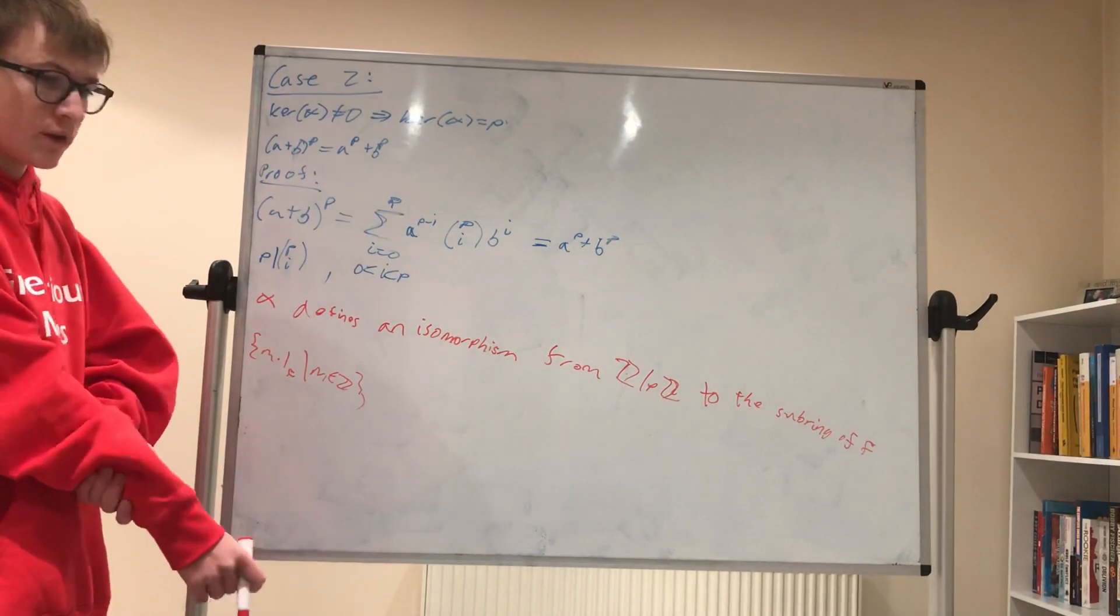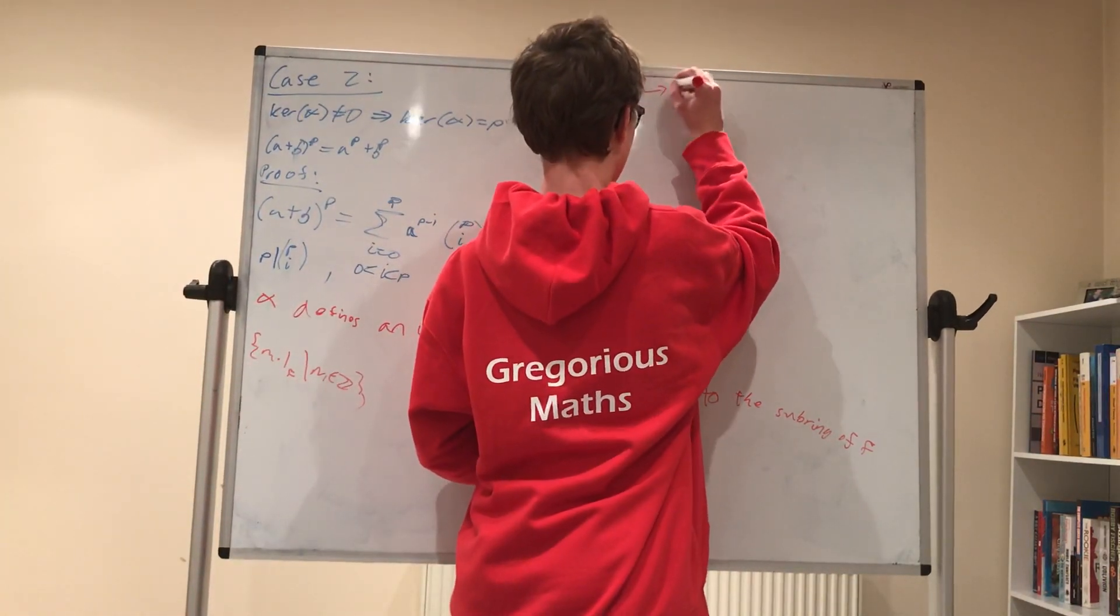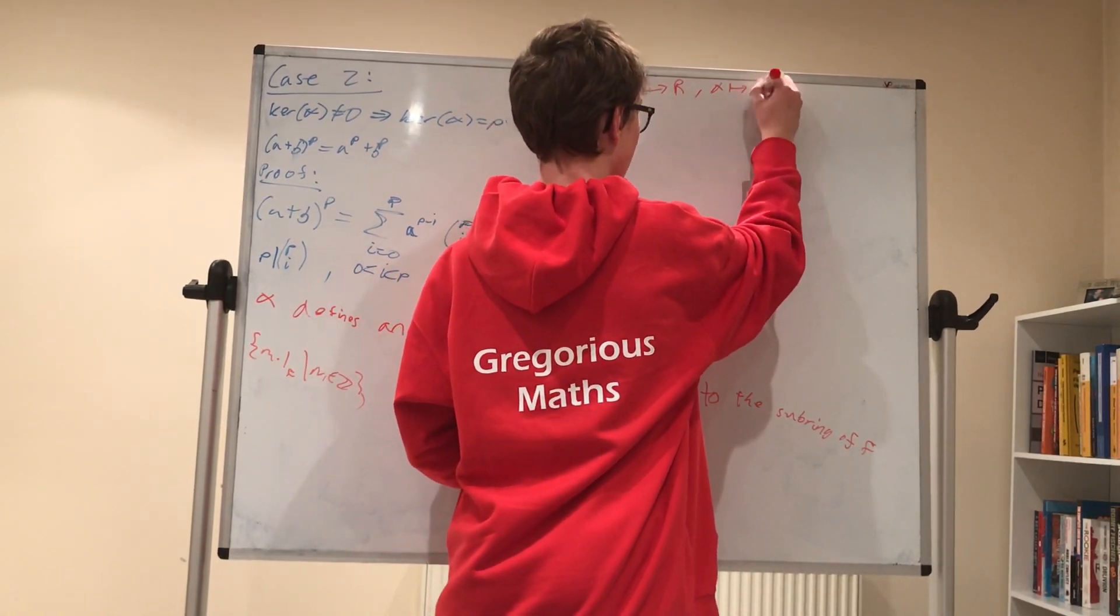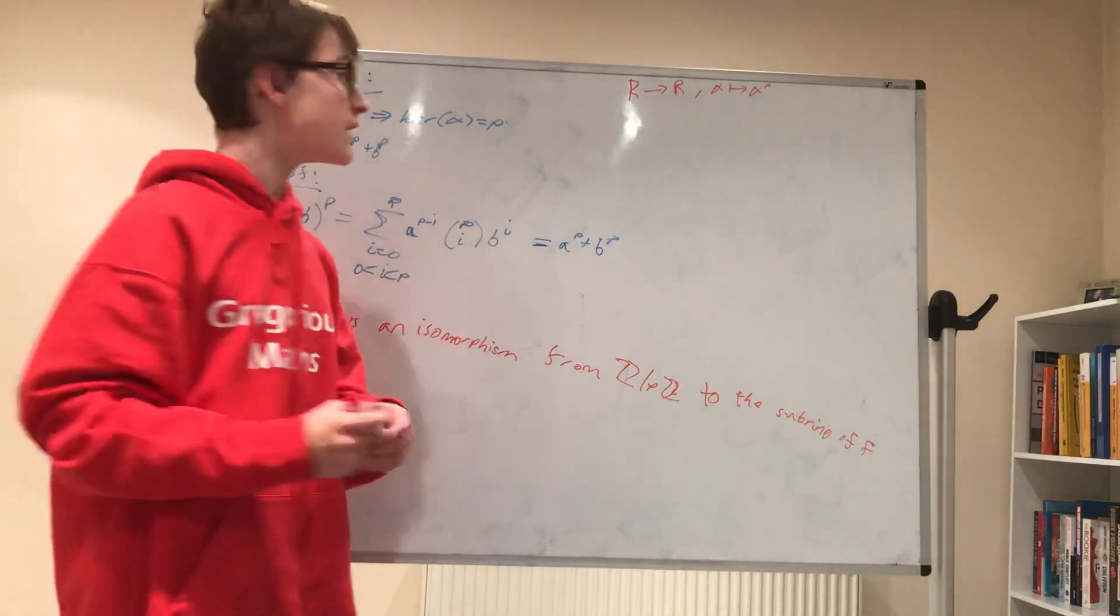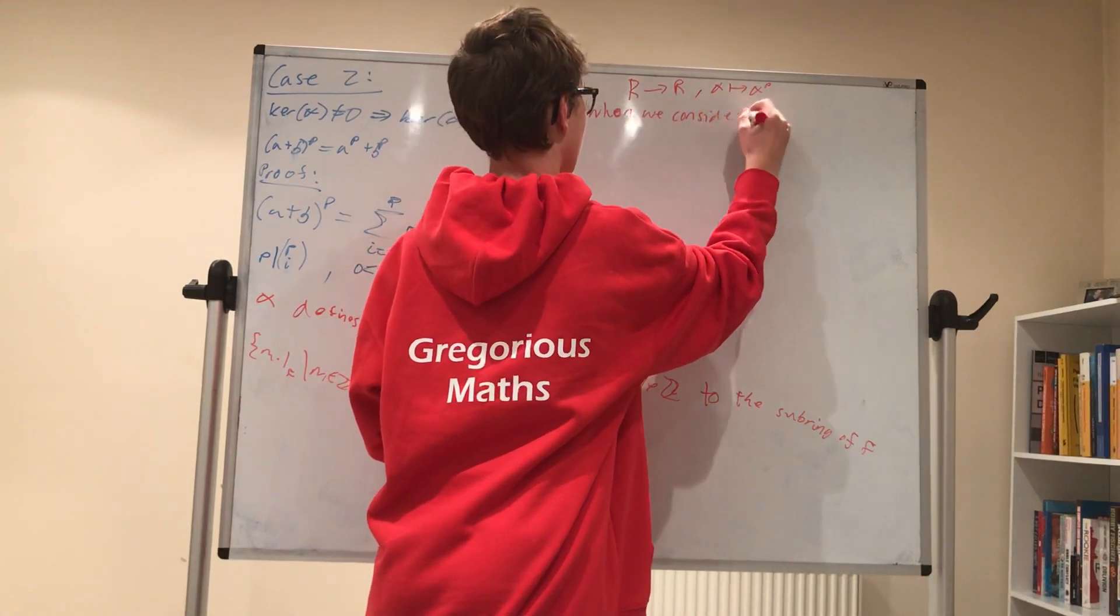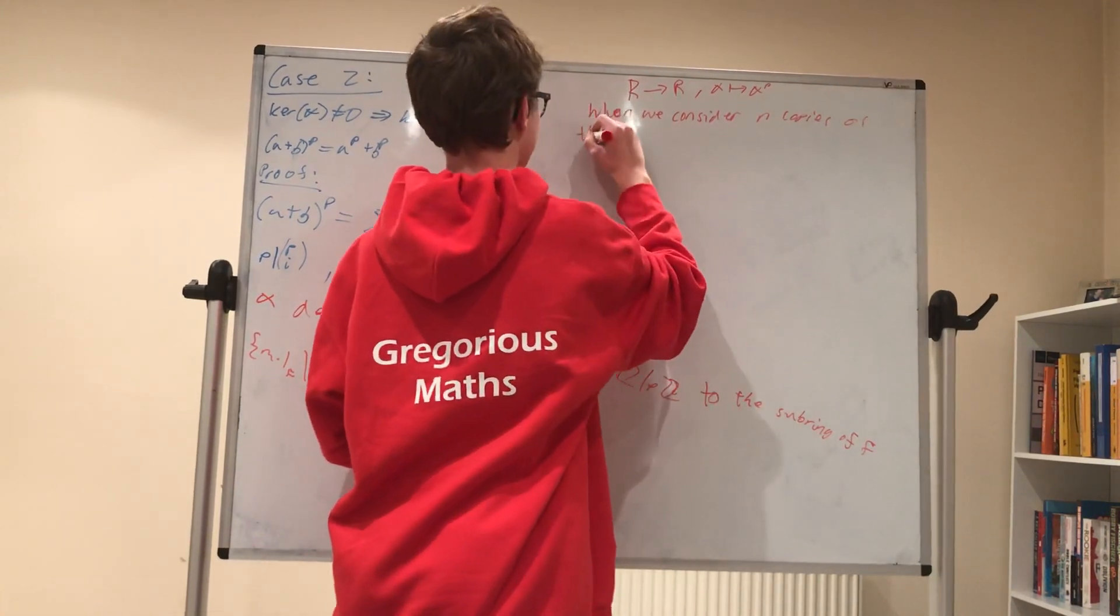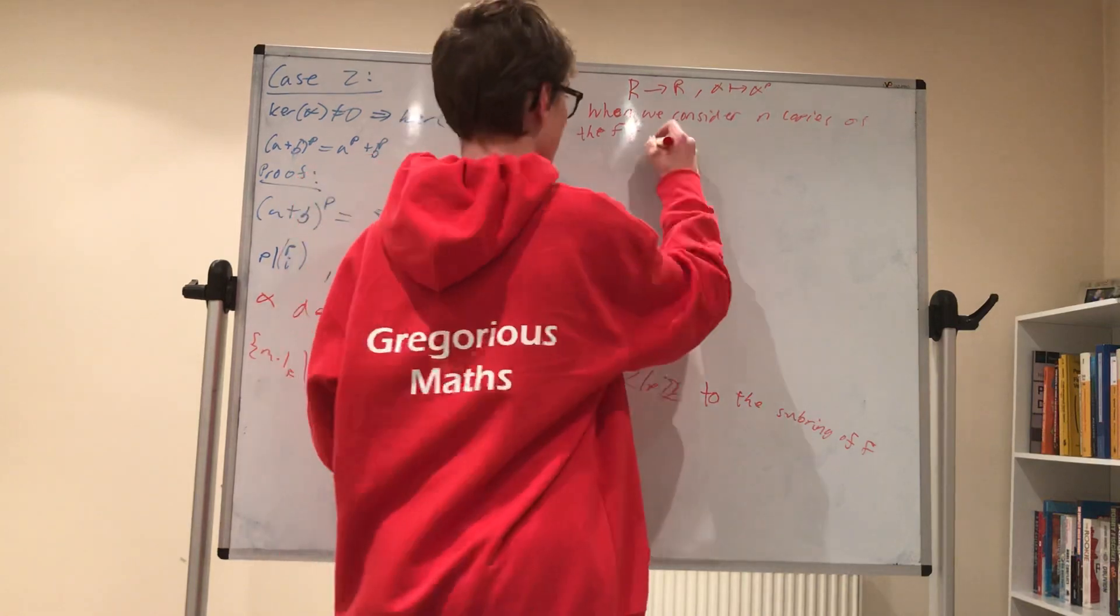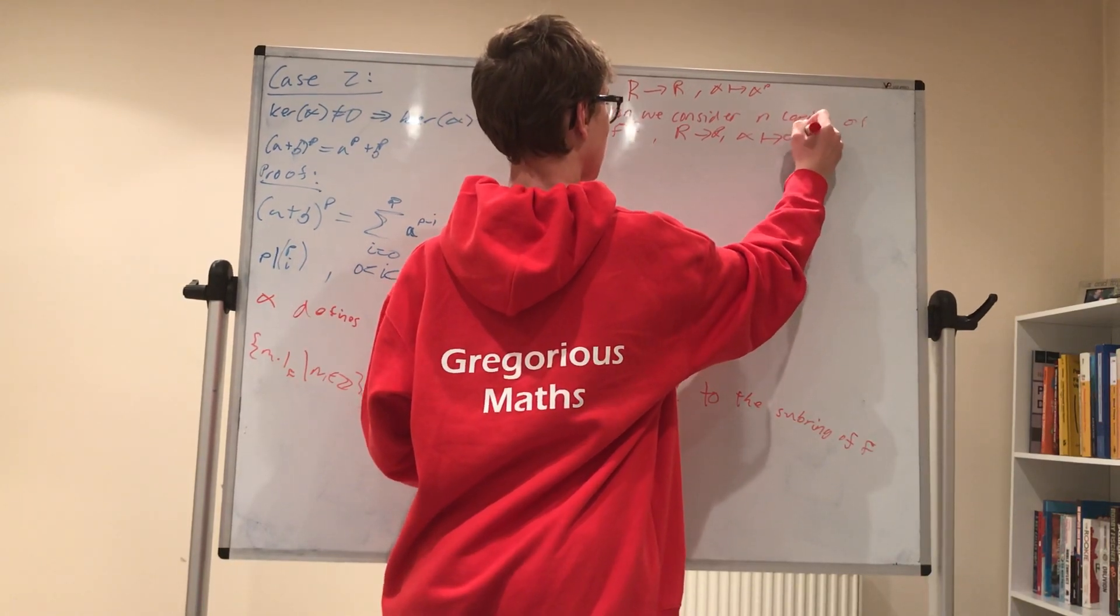And the last thing we'll look at is the Frobenius endomorphism. So this is the map which takes in an element of r and outputs r, and it sends alpha to alpha to the p. And an interesting thing about this is when you consider n copies of the Frobenius endomorphism, we get a map from r to r which now sends alpha to alpha to the p to the n.